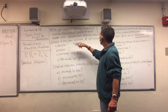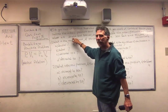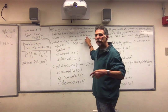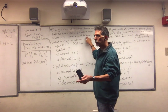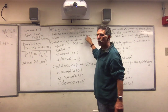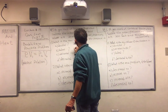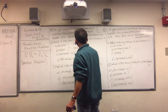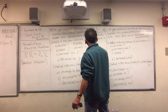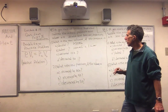Next one. What happens if the pressure is halved? If the pressure is halved, the volume has to be doubled. That's halved; this is doubled. So what's 2 times 500? The answer is 1,000 mL, or 1 liter. 1,000 mL is 1 liter.